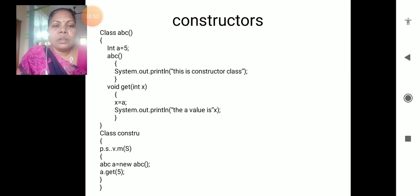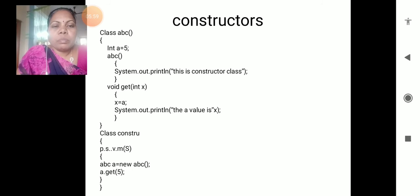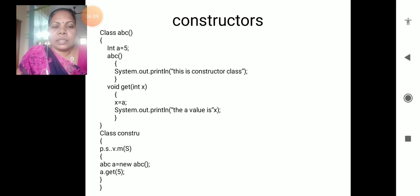Next, followed by a normal method - this is not a constructor method, this is only a normal method: void get, int x, x is equals to a, System.out.println 'the value is' x.